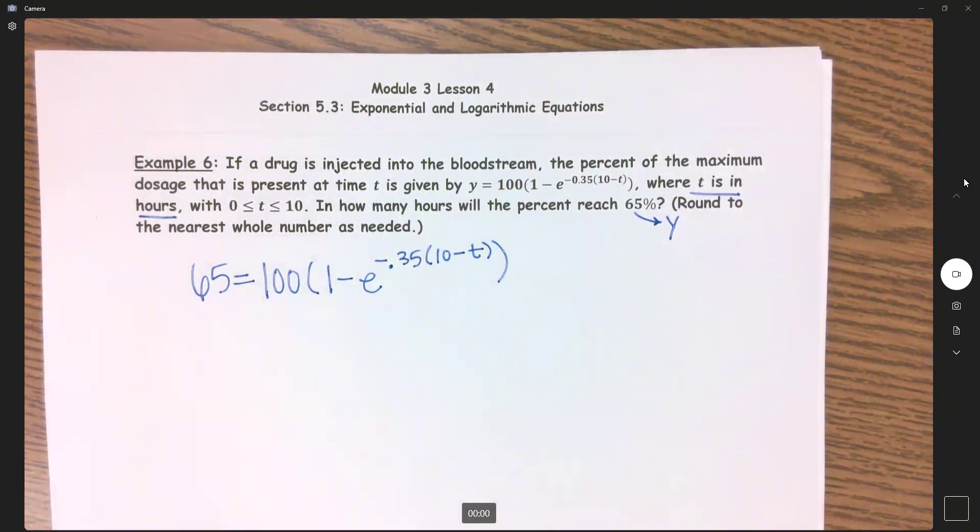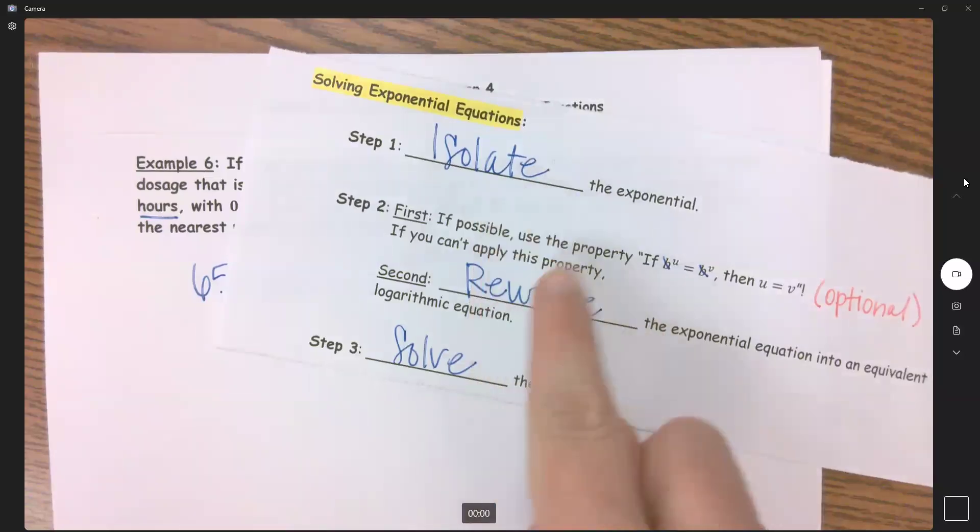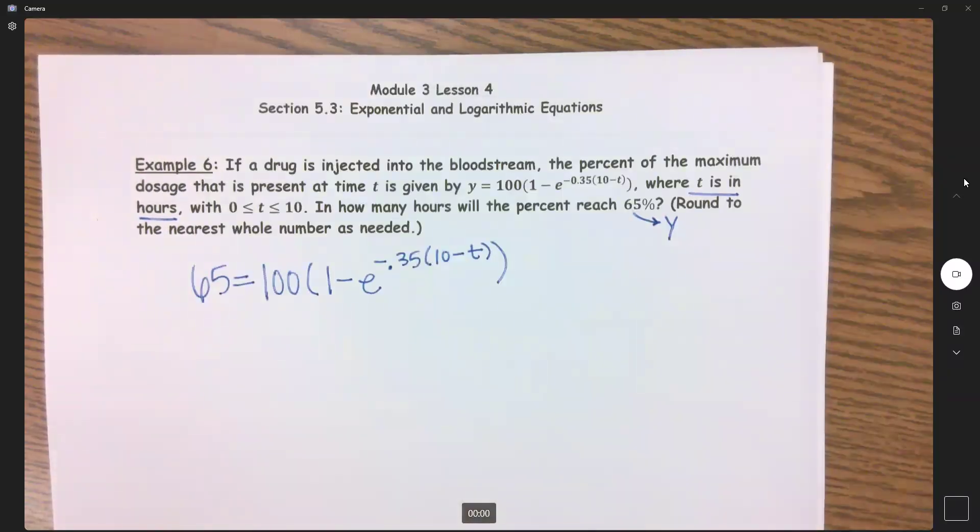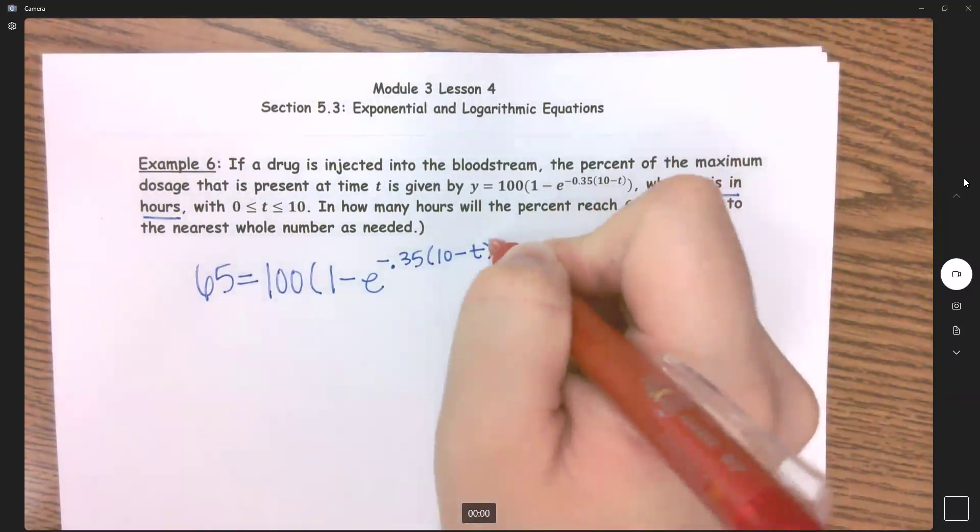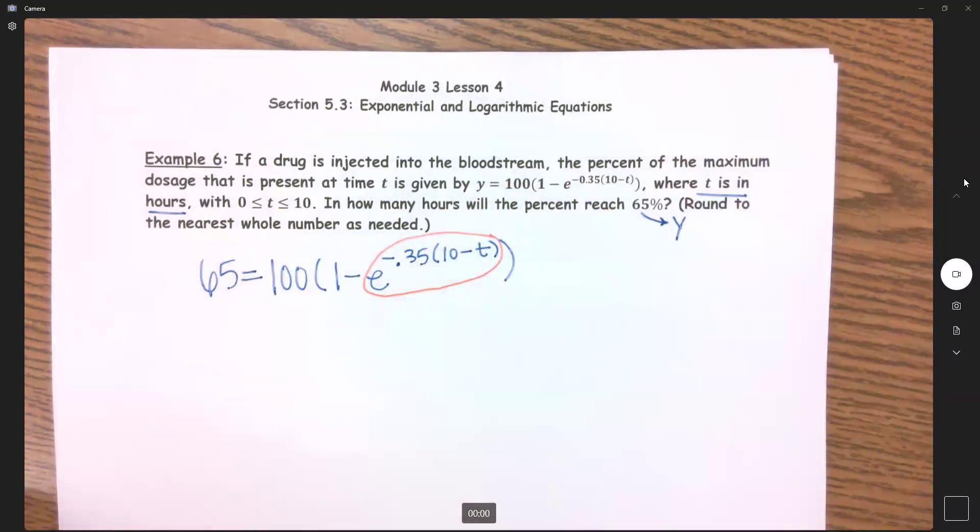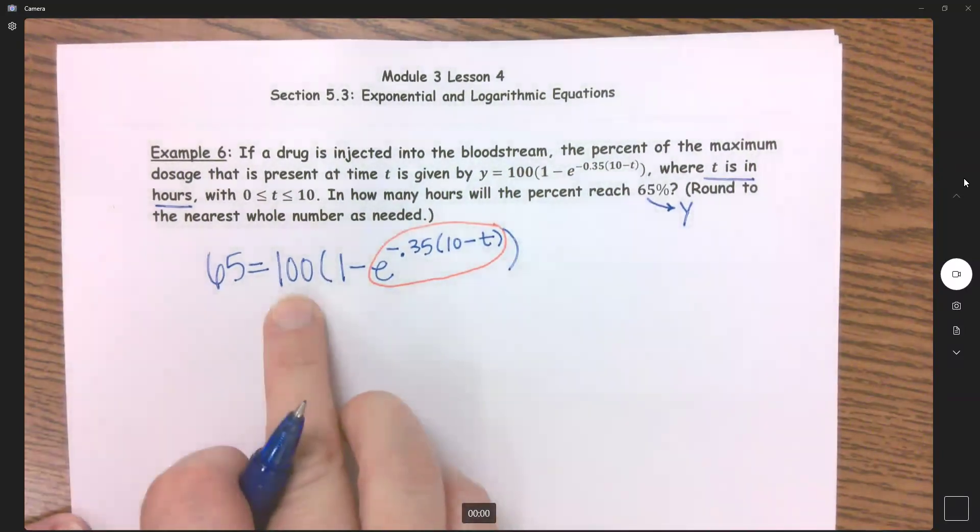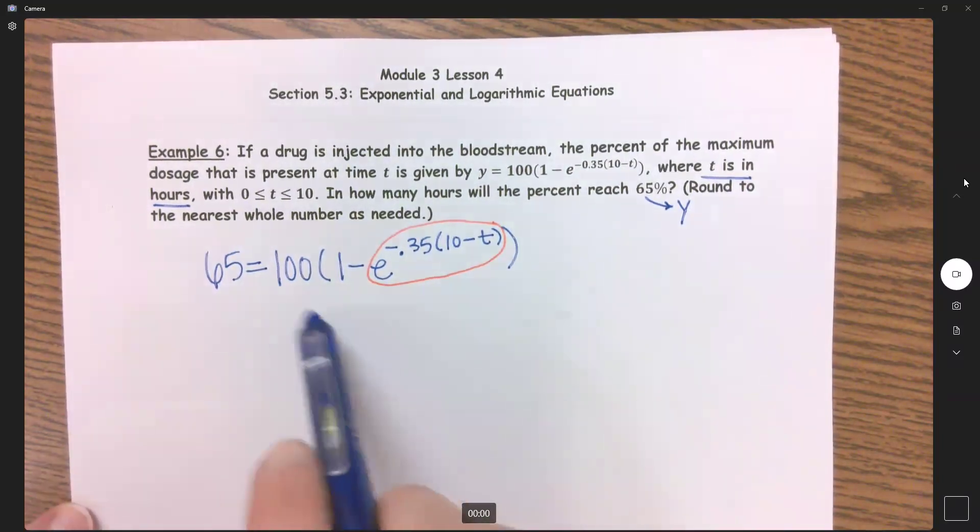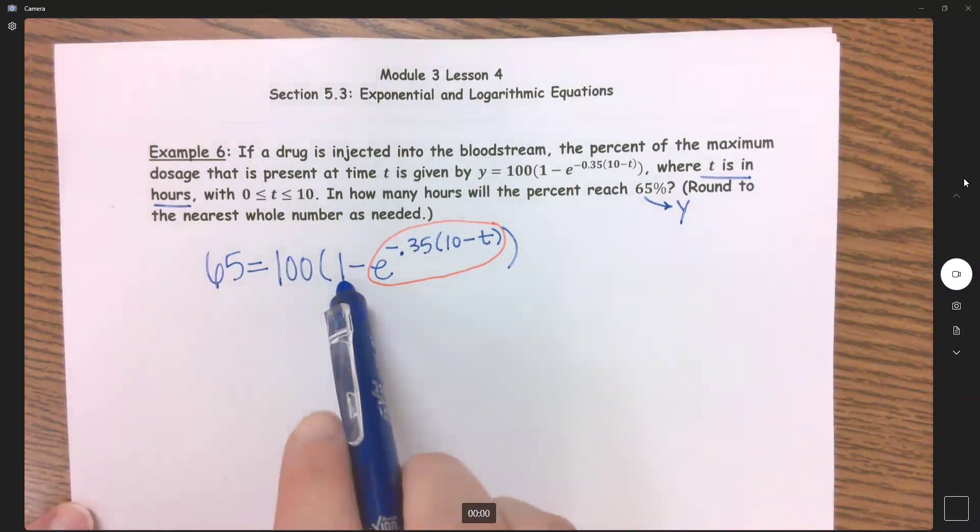Let's go through our steps: isolate, rewrite, solve. The first thing we need to do is isolate the exponential, and my exponential is that part right there. The first thing I need to do is get rid of this 100.